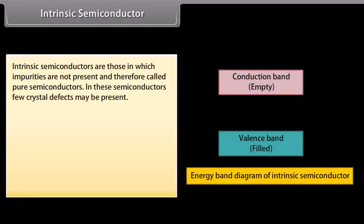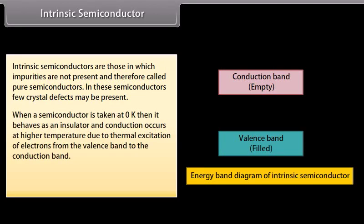Intrinsic semiconductors are those in which impurities are not present and are therefore called pure semiconductors. In these semiconductors, a few crystal defects may be present. When a semiconductor is taken at zero Kelvin, it behaves as an insulator, and conduction occurs at higher temperatures due to thermal excitation of electrons from the valence band to the conduction band. Examples include germanium and silicon.